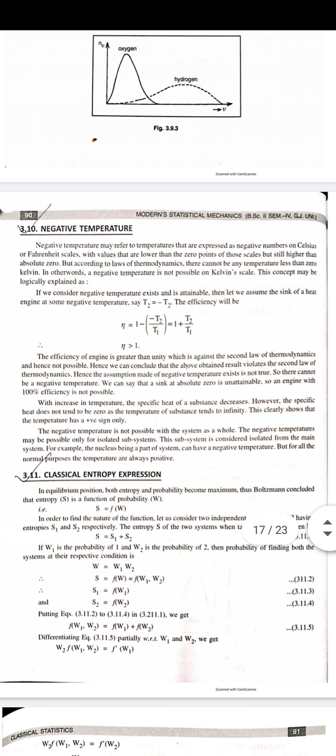Negative temperature may refer to temperatures expressed as negative numbers on Celsius or Fahrenheit scales, with values lower than the zero point of those scales but still higher than absolute zero. According to the laws of thermodynamics, there cannot be any temperature less than zero Kelvin. In other words, a negative temperature is not possible on the Kelvin scale.